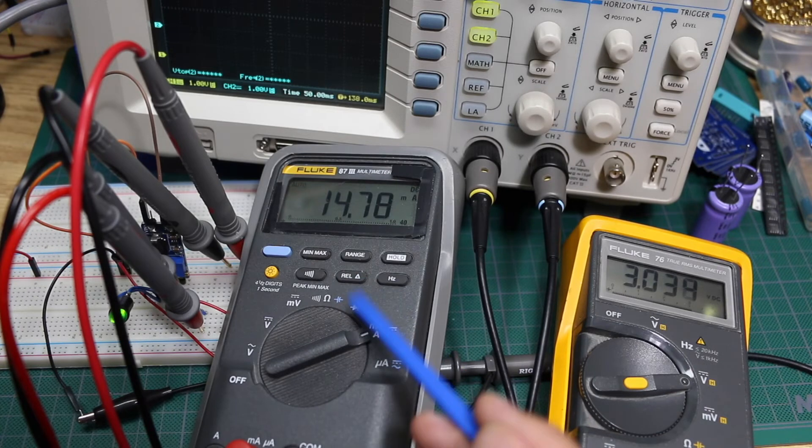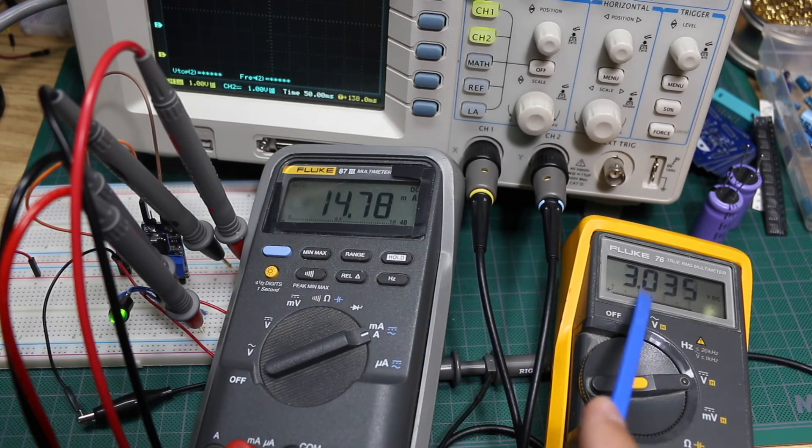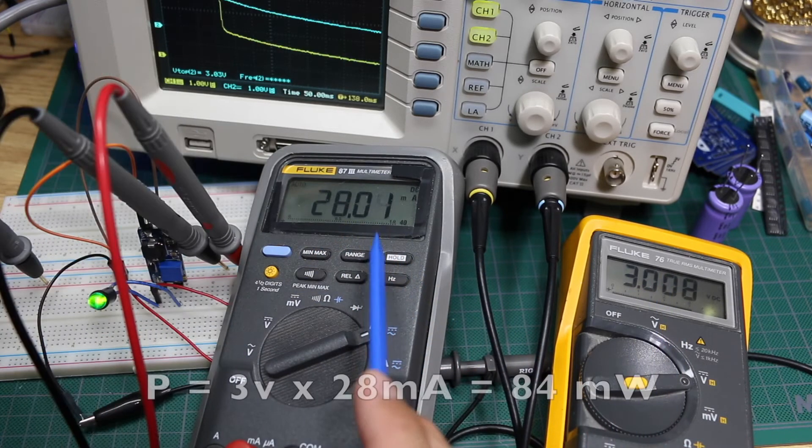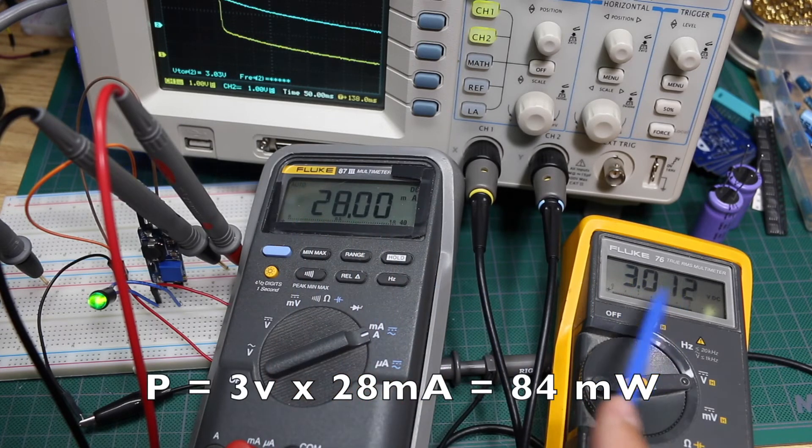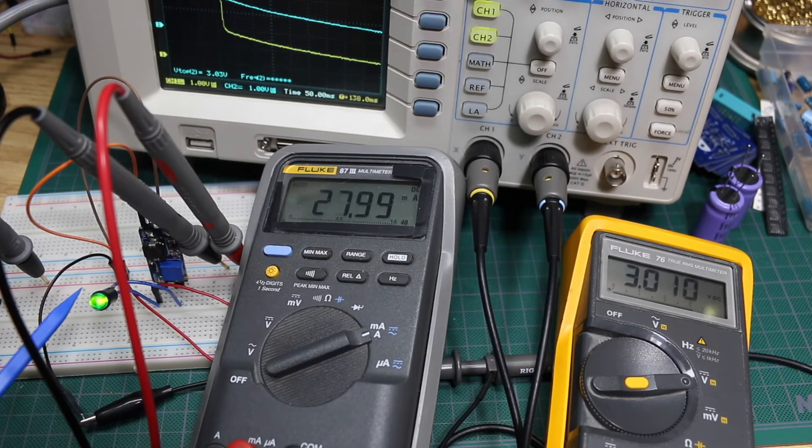I'm going to measure the current on the input to the boost converter. Now the ammeter is showing 28 milliamps at 3 volts in to power this 5 volt light at 14.77 milliamps.